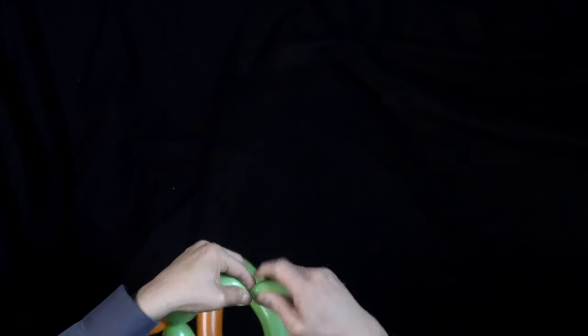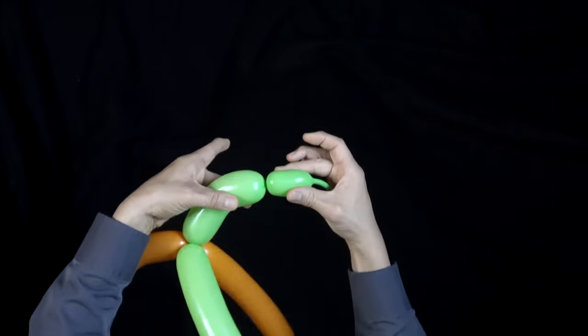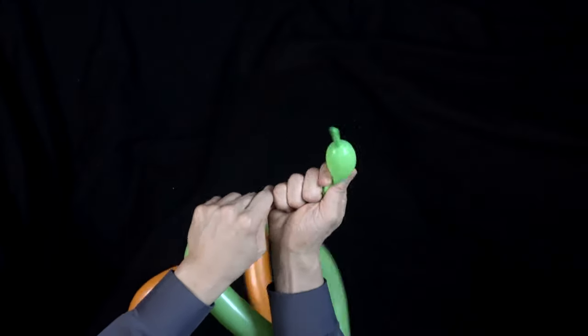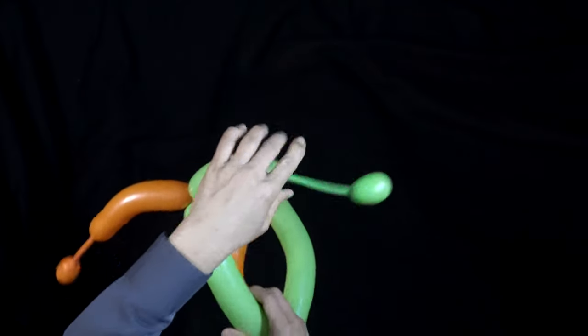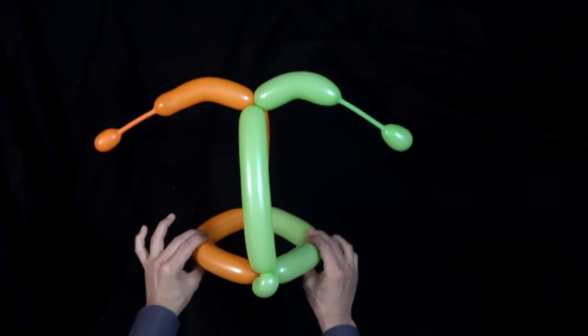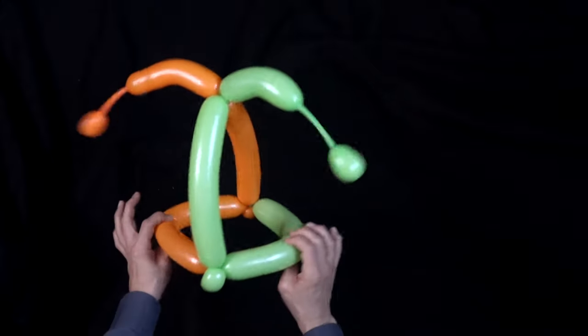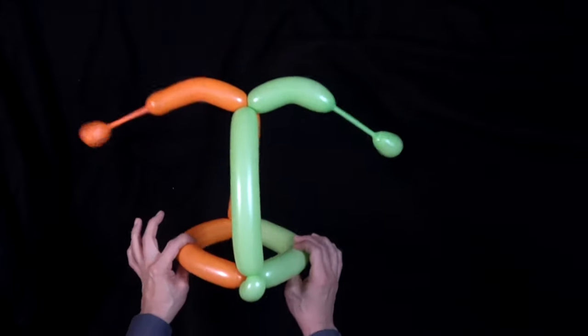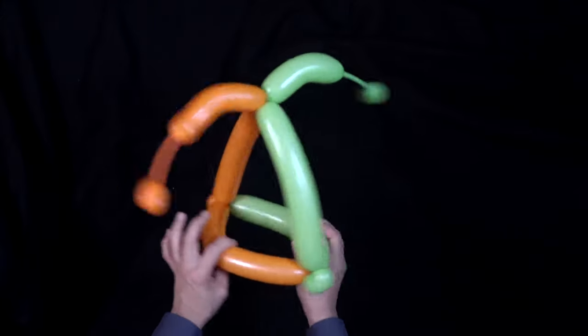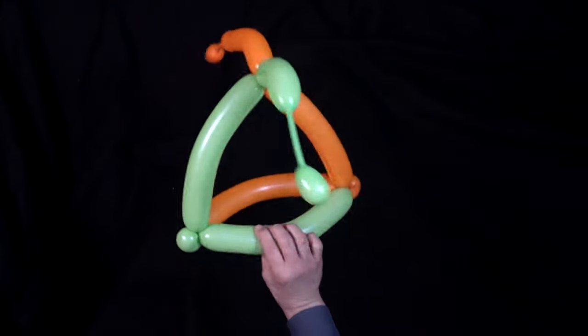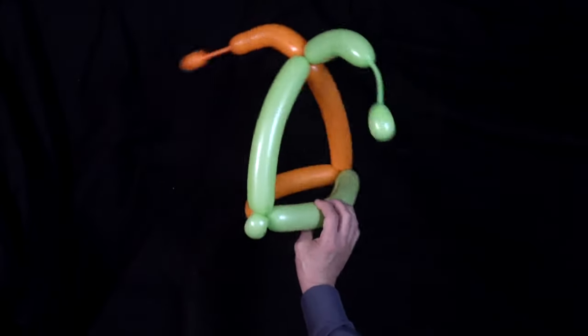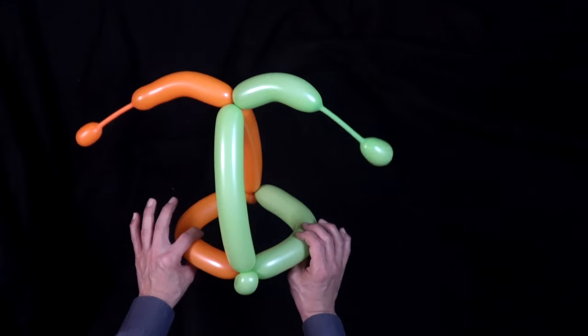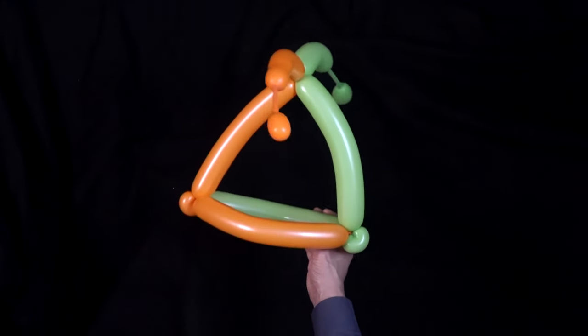There's one. Basic twist and push it to the end. And there you have a two balloon jester hat. Of course there is a three balloon version, takes one more balloon and a little more twisting, so you may want to use this one as a shortcut. And this will be very popular at events. It's very colorful and kids as well as adults will enjoy wearing these.